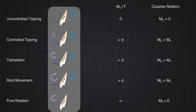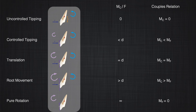Now if you put all these things on one slide, you can see that as we change the magnitude of the couple relative to the force, we can modify the magnitude of the moment that appears in the system. We can control the rotation resulting from the force and produce different types of tooth movement.